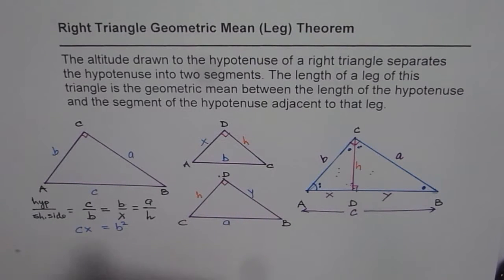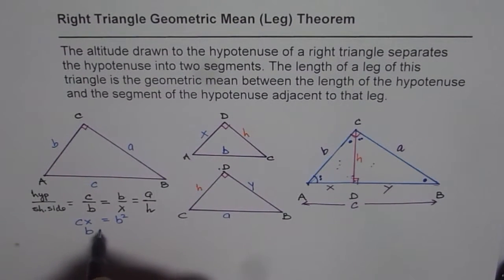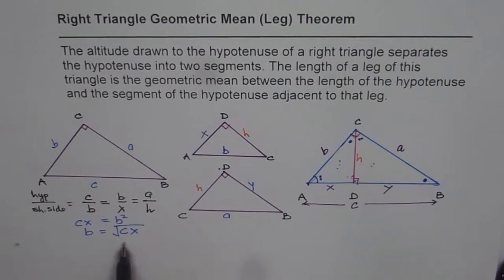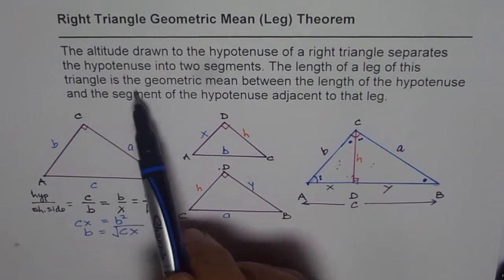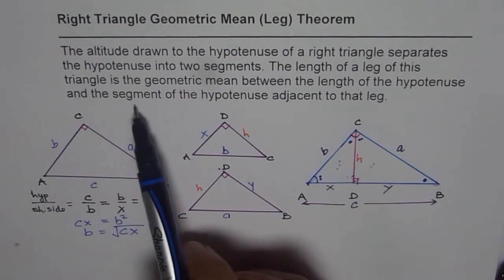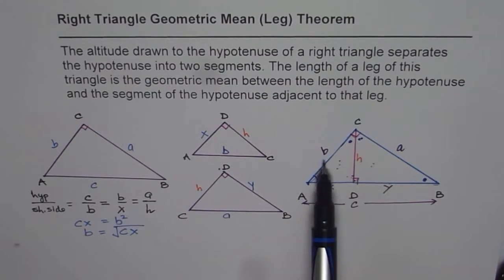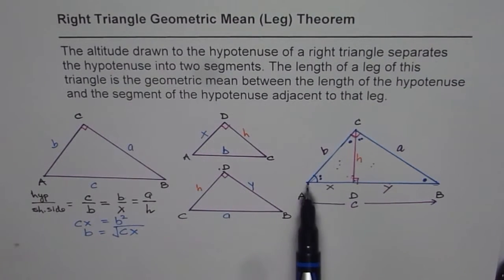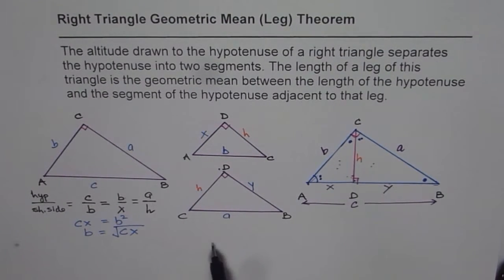So b equals the square root of cx. That is what we mean when we say the length of a leg of this triangle is the geometric mean between the length of the hypotenuse and the segment of the hypotenuse adjacent to the leg. The length of leg b is the geometric mean of the hypotenuse length and the adjacent segment.